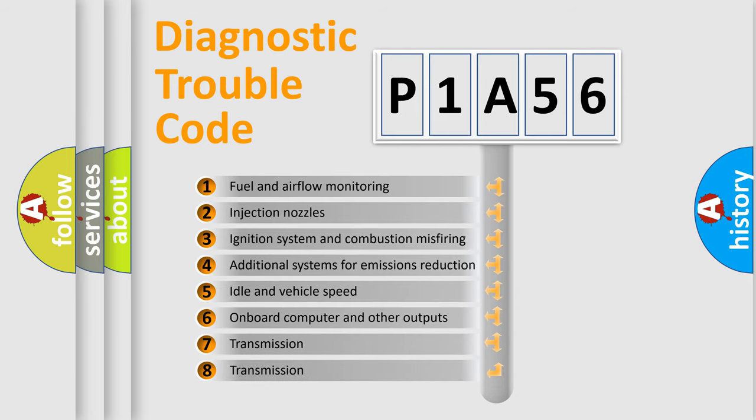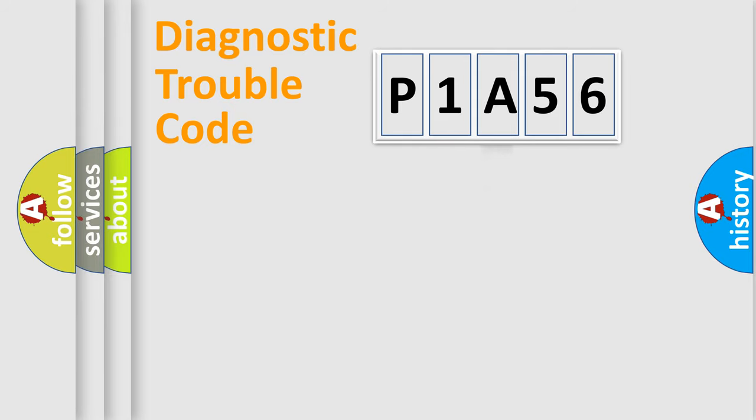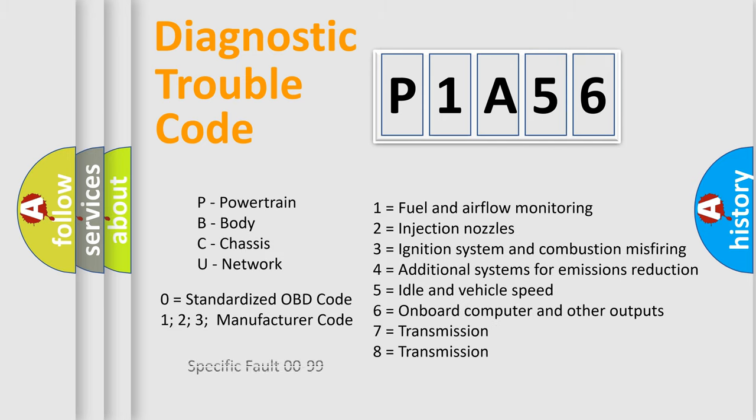The third character specifies a subset of errors. The distribution shown is valid only for the standardized DTC code. Only the last two characters define the specific fault of the group. Let's not forget that such a division is valid only if the second character code is expressed by the number zero.